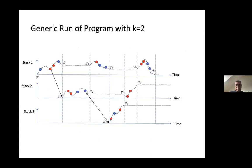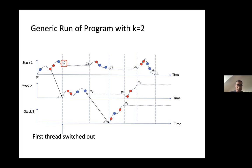Here is a picture of a generic run with context bound k equal to 2. There are three threads; for each thread, the diagram shows how the stack height changes over time. Initially one thread starts with global state G0, spawns a blue task, then red tasks and another blue task, and gets interrupted by the scheduler at G1. A red task takes control, produces its own tasks, and then the scheduler swaps it out, returning control to the first thread from G2 onwards. The run continues with a third thread, and the first thread eventually terminates.